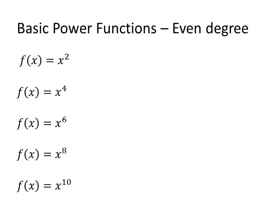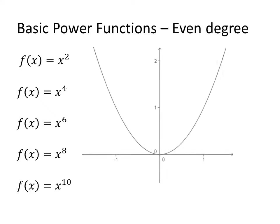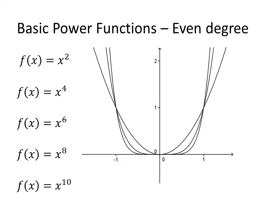Zooming in near the origin: x squared intersects the origin and goes through the points (1,1) and (-1,1). x to the fourth also goes through these same points, but is much flatter between 0 and 1, and steeper after 1. x to the sixth is flatter still, and x to the eighth and x to the tenth follow the same pattern — increasingly flat near the origin, then very steep as they pass through 1.